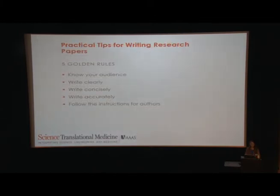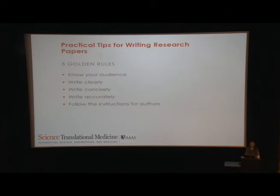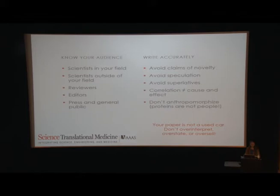Now just a brief mention of some basic tips for writing strong research papers. There are five golden rules: know your audience, write clearly, write concisely, write accurately, and please follow the instructions. Who's your audience? It's scientists in your field, outside your field, reviewers, editors, and possibly the press and general public. Most of these people are drowning in information and very busy. So make sure every word and every sentence says what you mean to the appropriate audience. Avoid claims of novelty — correlation is not causation, proteins are not people, and you're not selling a used car — so please don't over-interpret, overstate, or oversell your data.